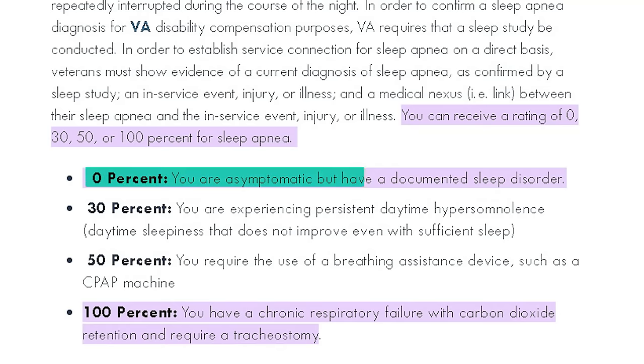Let's talk about sleep apnea ratings. There are four of them: 0, 30, 50, and 100 percent. Let's start off with a 0% rating for sleep apnea. According to the law, the CFR, it says you are asymptomatic but have a documented sleep disorder.